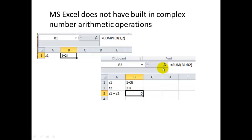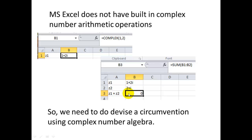But when I try to sum them using =SUM(B1:B2), it gives 0. That's incorrect because from complex algebra, the real parts and imaginary parts must be added separately. The answer should be 3+3i. How do we circumvent this problem?